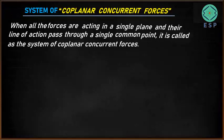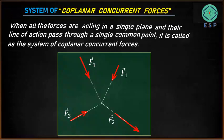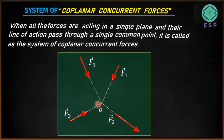Let's understand this with the help of an example. We have a plane here, and in this plane we have forces F1, F2, F3, and F4. If you extend the line of action, they are going to meet at the same point O. All these forces F1, F2, F3, and F4 are in a single plane and their line of action passes through the same point O. This is an example of a system of coplanar concurrent forces.